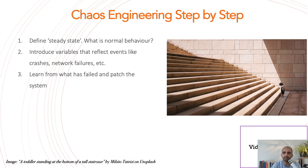Secondly, we should introduce variables that mimic real-world problems — for example, crashes, network slowness, or network failures. We should introduce variables that mimic these kinds of real-world events for our application, and then see how our application behaves, learn from it, create tasks for it, and make our application better for the production environment. This is one of those practices that makes sure you are running very well in production and your users have a great experience.